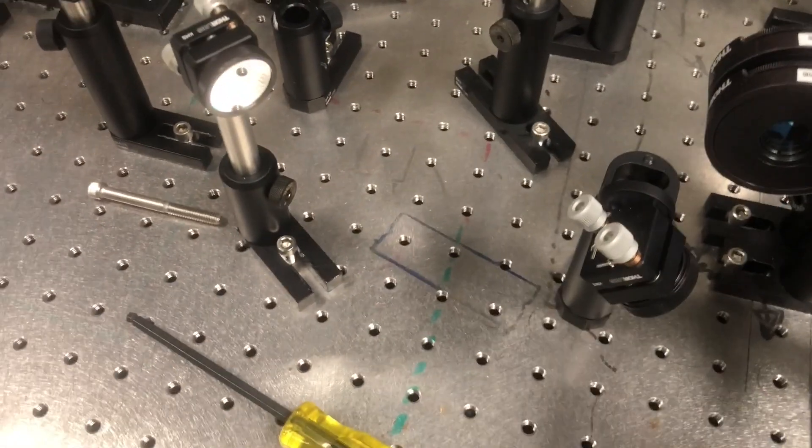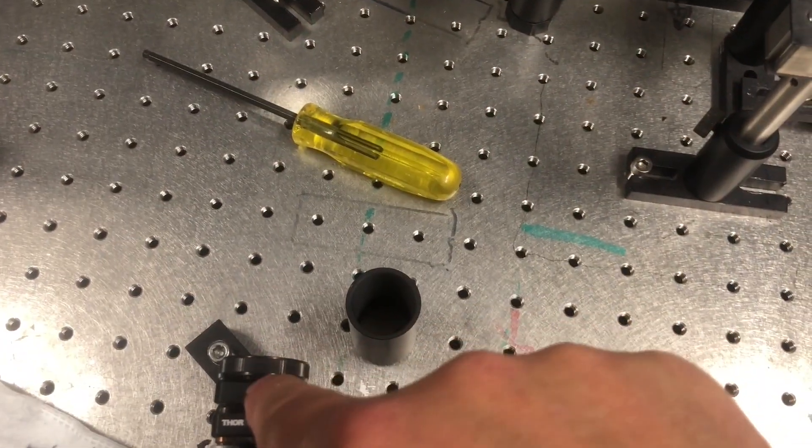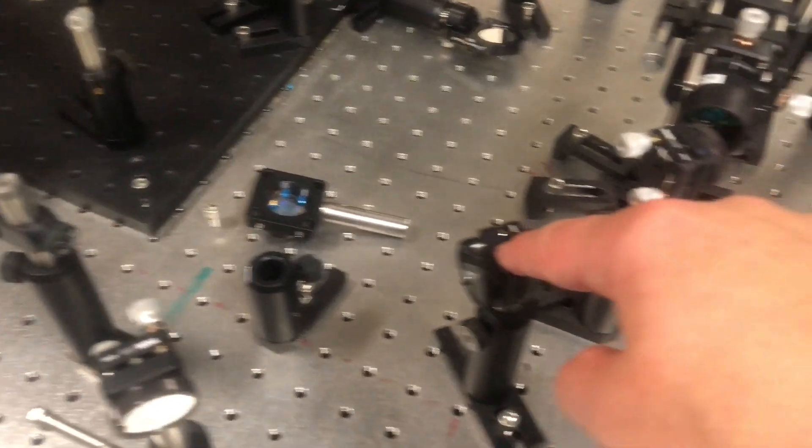So at this point, we have two beams that are perfectly overlapped, ideally, and then we're going to send them to just a few steering mirrors so that they can be sent to a final mirror that will send the beam to a lens and our crystal that we'll put here and towards the screen we'll put over there.